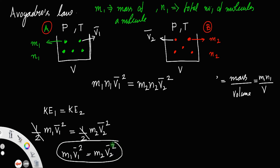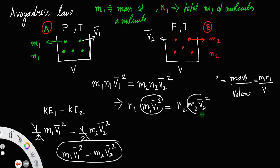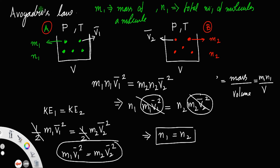Substituting this result back into the equation, the m1·V̄1² and m2·V̄2² terms cancel, leaving n1 = n2. This is exactly what Avogadro's law states: at constant pressure and temperature, equal volumes of different gases contain equal numbers of molecules.